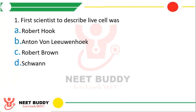Question number one. The first scientist to describe live cells was: option A Robert Hooke, option B Antoine von Leeuwenhoek, option C Robert Brown, or option D Schwann. The correct answer is option B — Antoine von Leeuwenhoek. Don't confuse it with the discovery of the cell — cell was discovered by Robert Hooke, but he discovered dead cells. So the first live cell was described by Antoine von Leeuwenhoek.